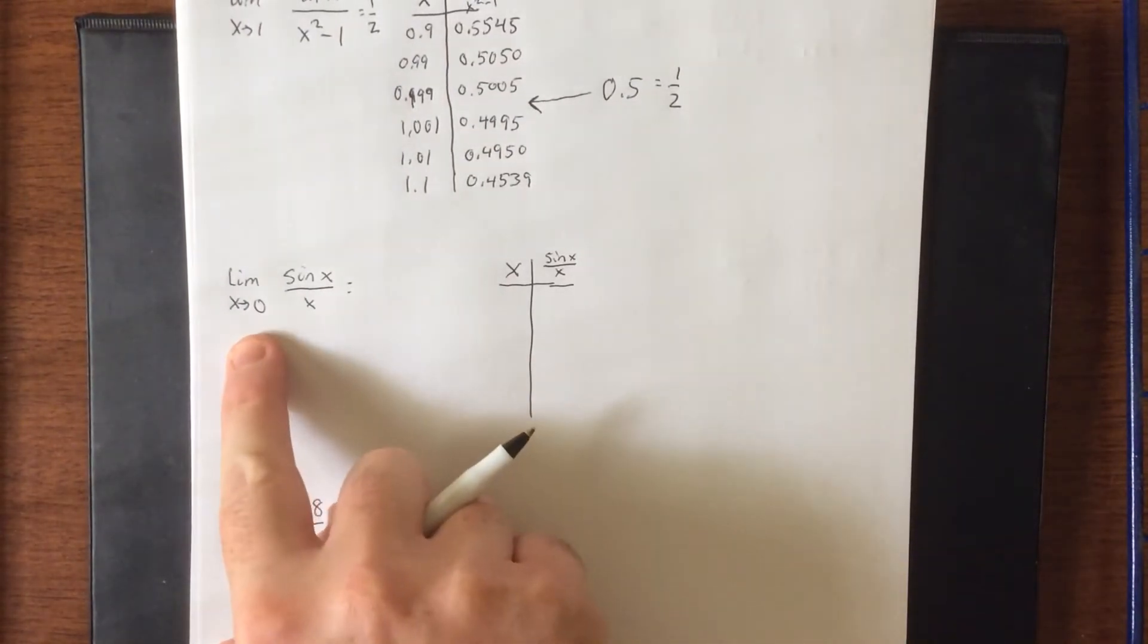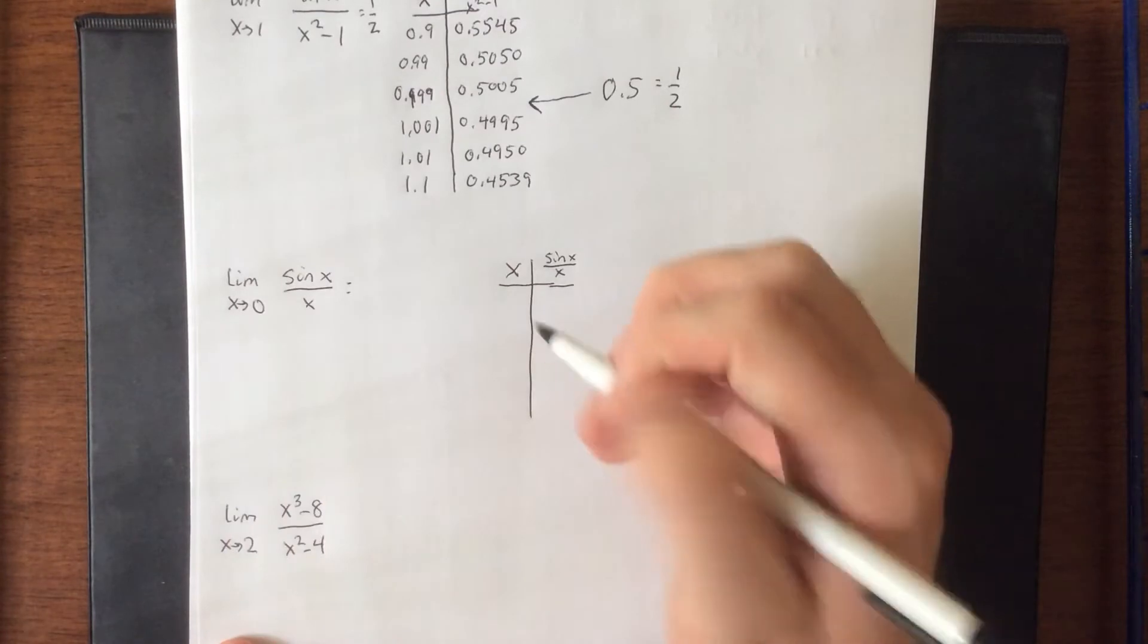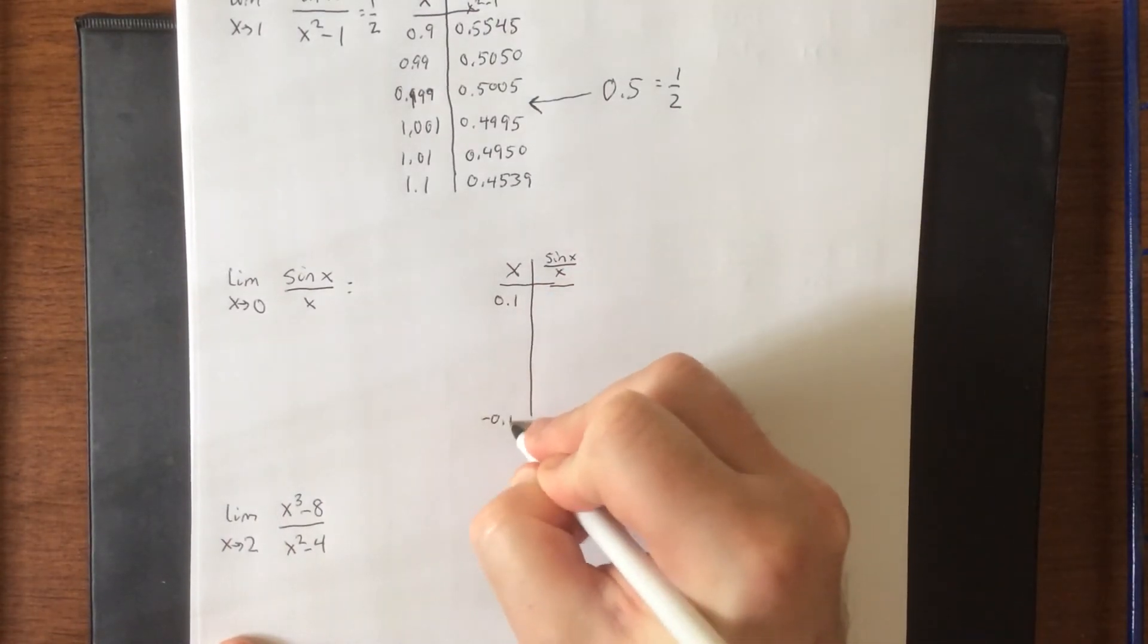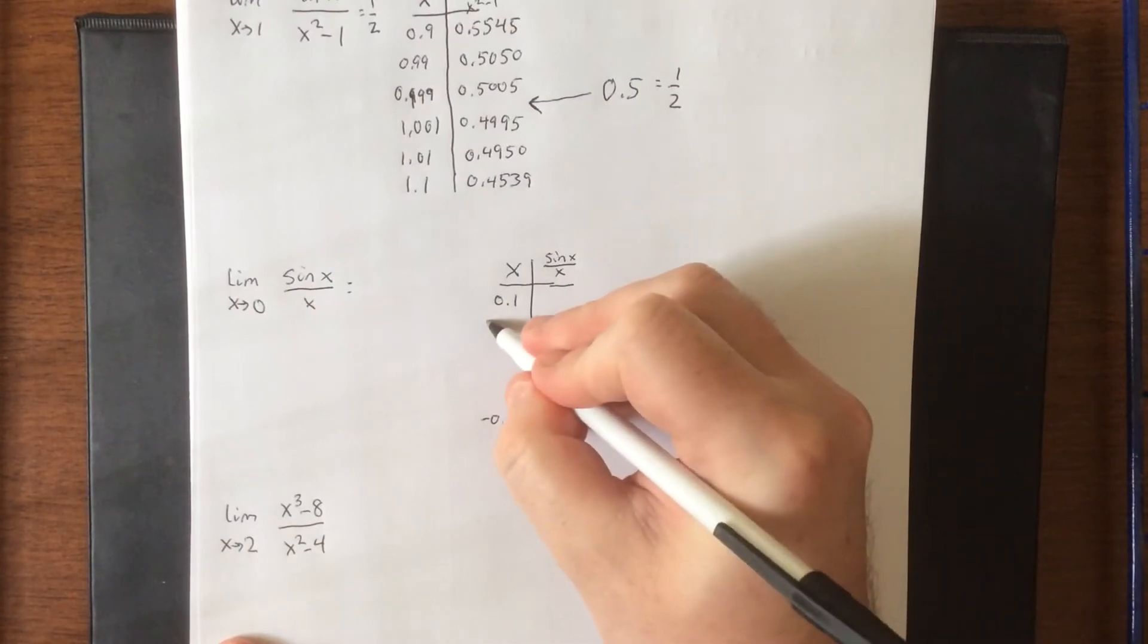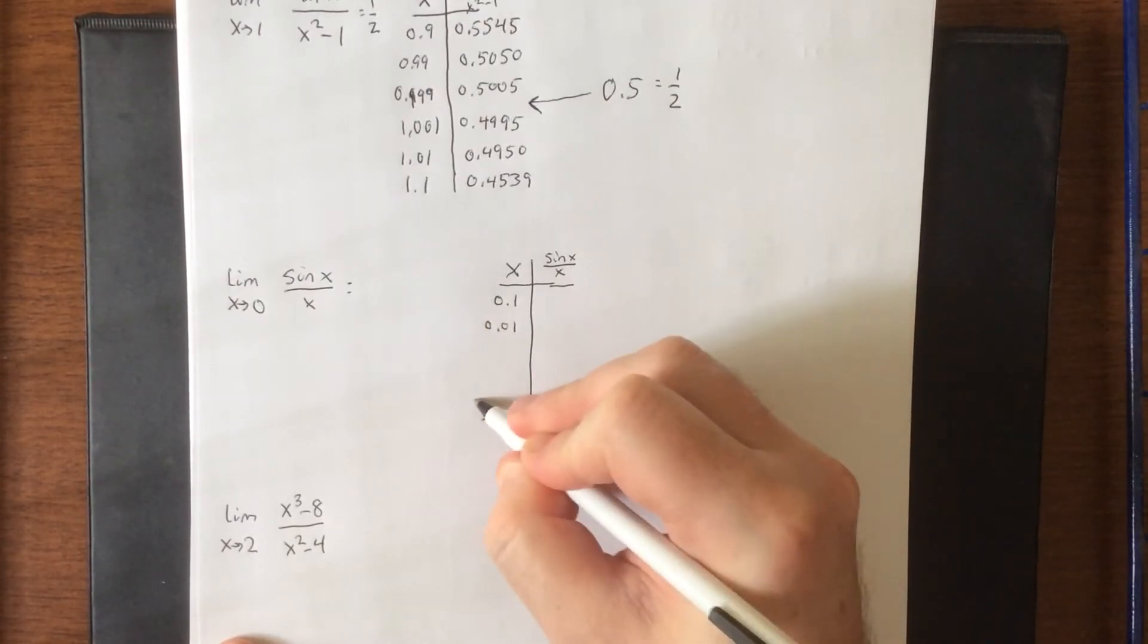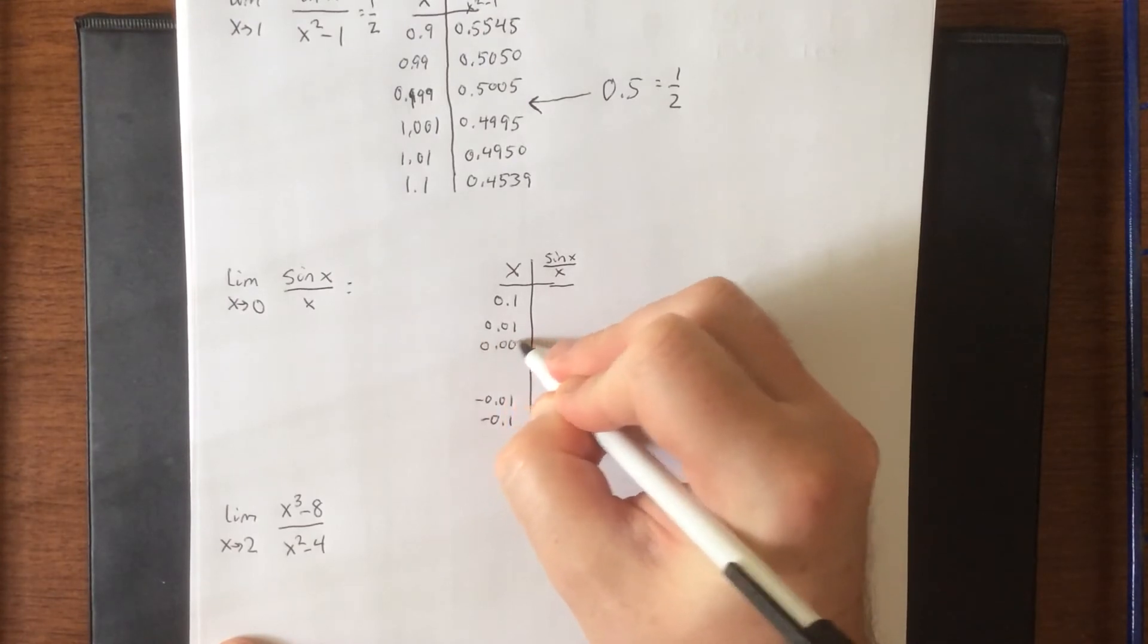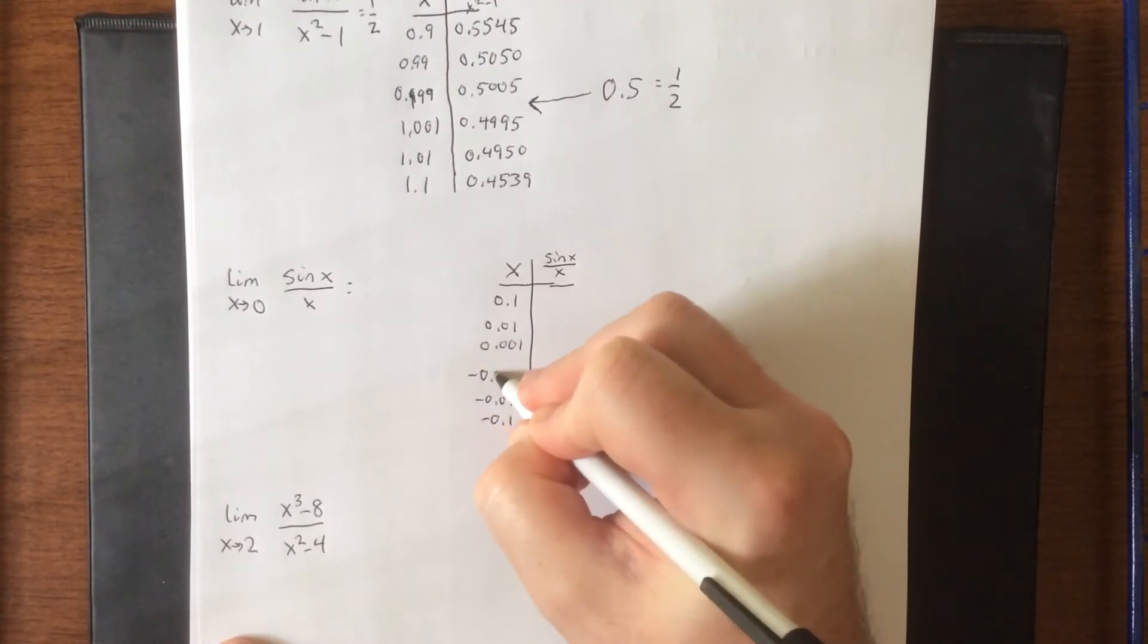Now this time, x is approaching 0, so I'd like to go 0.1 units on either side of 0. So positive 0.1, negative 0.1, 1 one-hundredth of a unit on either side, and 1 one-thousandth of a unit on either side as well.